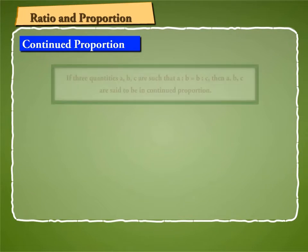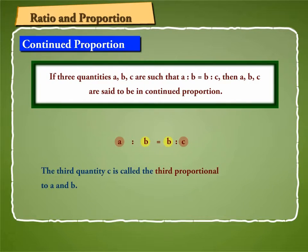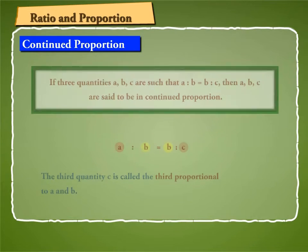Continued Proportion: If three quantities A, B, C are such that A is to B is equal to B is to C, then A, B, C are said to be in continued proportion. The quantity in the middle, that is B, is said to be the mean proportion between A and C. The third quantity C is called the third proportional to A and B.